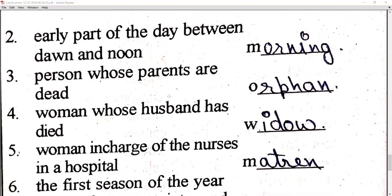Second example: 'Early part of the day between dawn and noon' — that is 'morning'. So this whole sentence is substituted by one word: morning.